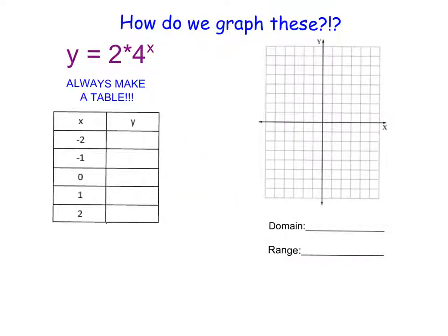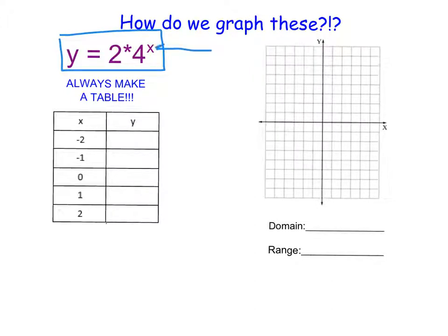When we have an exponential function, it will look something like this: y equals 2 to the power of x, or y equals 3 times 2 to the power of x, or y equals 4 times one-half to the power of x plus 7. Notice that in every single one of these examples, x is in the exponent — that is what makes something an exponential function. Now we have y equals 2 times 4 to the power of x, which is exponential because x is in the exponent.